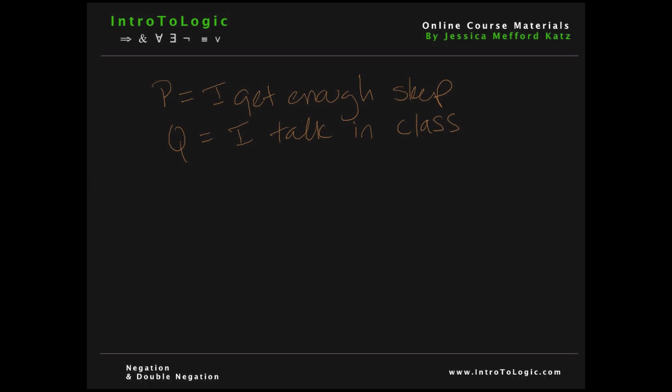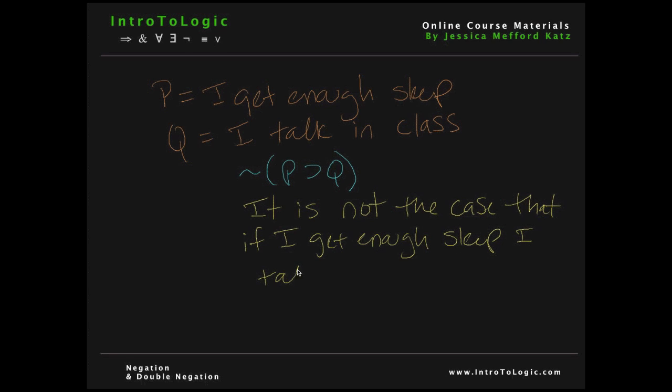So let's define P as I get enough sleep and Q as I talk in class. For the first sentence, we have it's NOT the case that IF P THEN Q. And if we plug in these definitions for P and Q, we get IT IS NOT THE CASE THAT IF I GET ENOUGH SLEEP, I TALK IN CLASS. So interpreting this sentence we get, it's not the case that if I get enough sleep, I talk in class. So getting enough sleep does not give you the ability according to the sentence to talk in class.